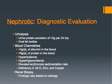Diagnostic tests that would show abnormalities with nephrotic disease include urinalysis, blood chemistries, and renal biopsy. Urinalysis would show proteinuria, and if the patient had hyperlipidemia, oval fat bodies may be present in the urine. These oval fat bodies result from lipid deposits being sloughed in the renal tubular epithelial cells. Blood chemistries would show hypoalbuminemia and hypoproteinemia. Additional findings may include hyperlipidemia, hypertriglyceridemia, elevated erythrocyte sedimentation rate, and deficiencies in vitamin D, zinc, and copper. Renal biopsy results vary based on etiology and disease.